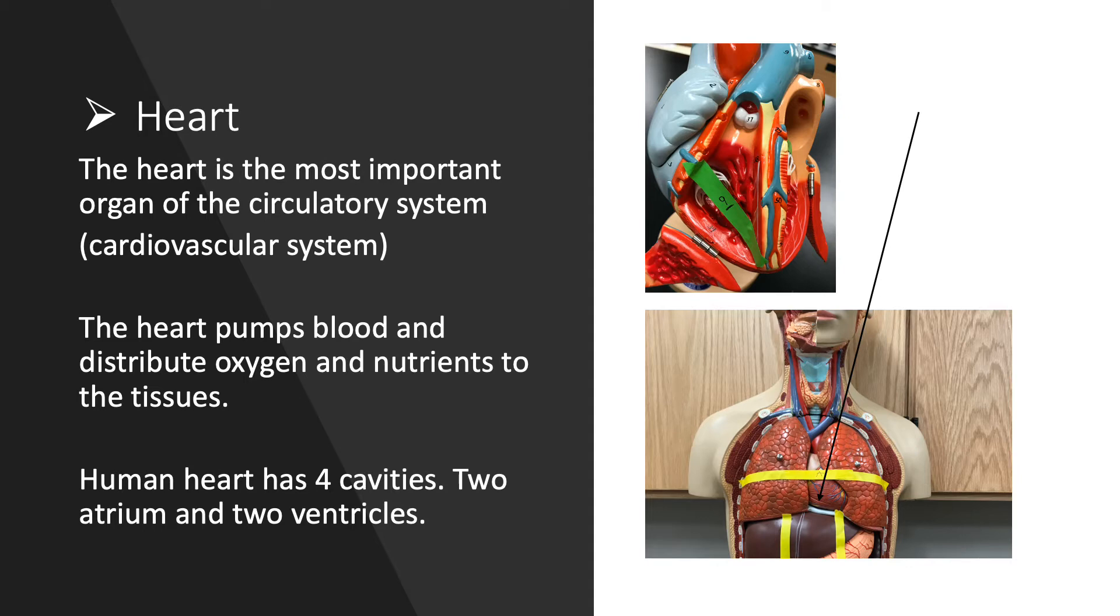The human heart has four cavities: two atria in the top and two ventricles, the larger cavities, in the bottom. Fish have two chambers. Reptiles, except crocodiles, have three-chambered hearts. Only birds and mammals have four-chambered hearts.